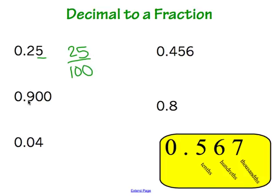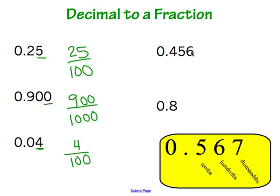Moving to the next one: 0.900 is 900 thousandths — we write it exactly as we hear it. Next, 0.04 is 4 hundredths, written as 4 over 100. Next, the 6 in 0.456 falls in the thousandths place, so this is 456 thousandths, written as 456 over 1,000. And our last one: the 8 is in the tenths place, so 0.8 is written as 8 tenths, or 8 over 10.